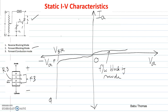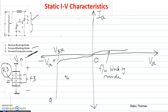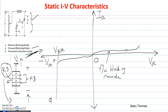Now we will see how the device goes to the forward conduction region. In the forward conduction mode, we are trying to increase the positive voltage applied across the anode and cathode. When we increase this voltage, the reverse biased junction's depletion layer vanishes away, and there is a small increase in current. It reaches a point of avalanche breakdown, which corresponds to the forward breakover voltage VBO.